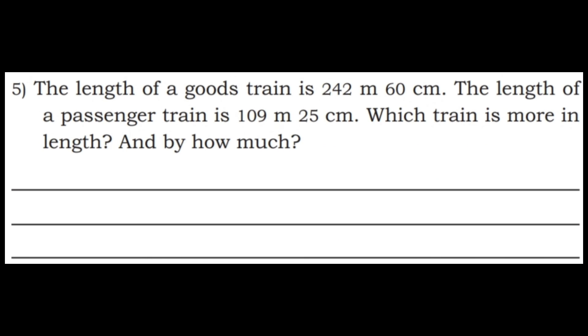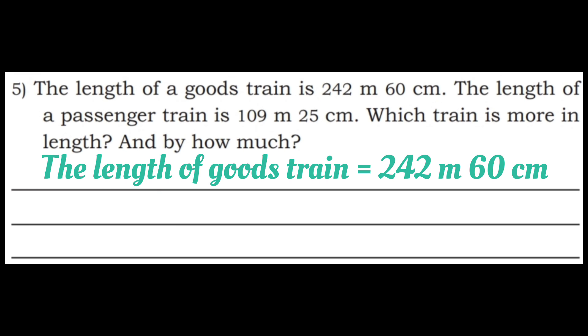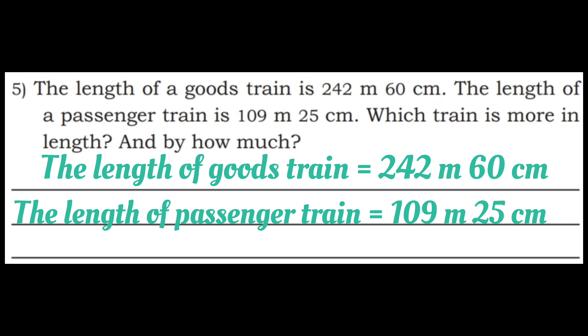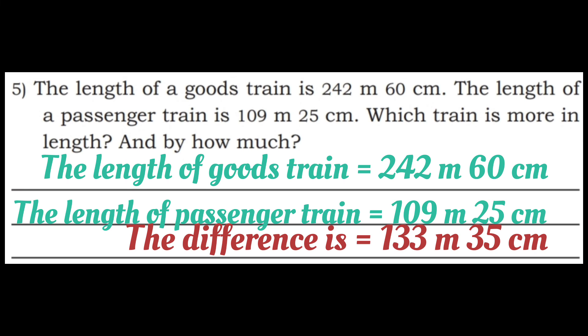Q5: The length of a goods train is 242 meter 60 centimeter. The length of a passenger train is 109 meter 25 centimeter. Which train is more in length and by how much? Length of goods train = 242 meter 60 centimeter. Length of passenger train = 109 meter 25 centimeter. Difference: borrow 10 minus 5 is 5, 5 minus 2 is 3, borrow: 12 minus 9 is 3, 3 minus 0 is 3, 2 minus 1 is 1. Answer: 133 meter 35 centimeter.